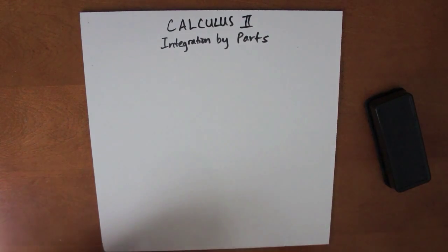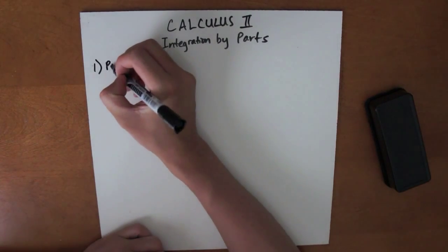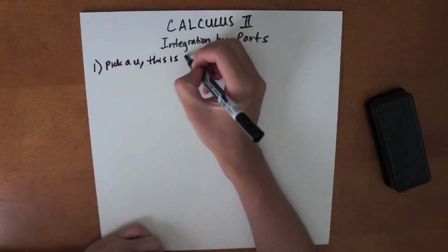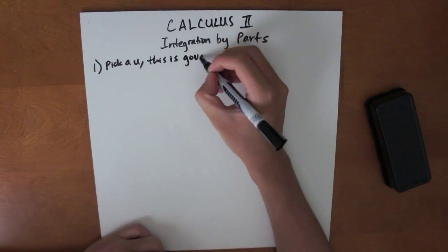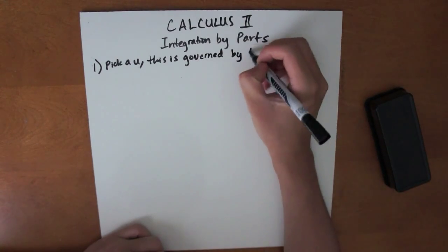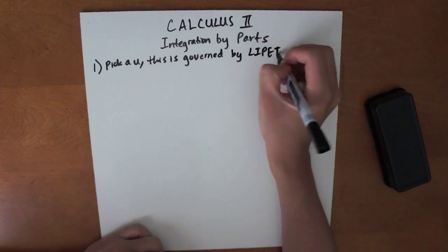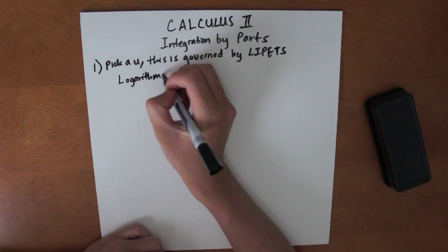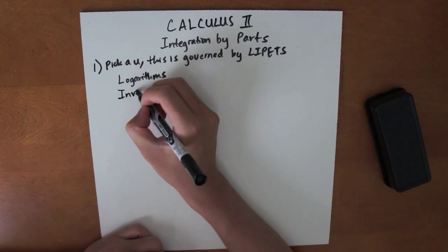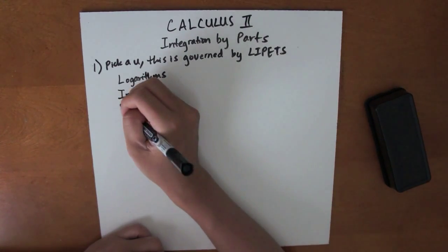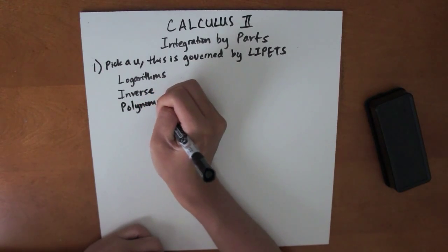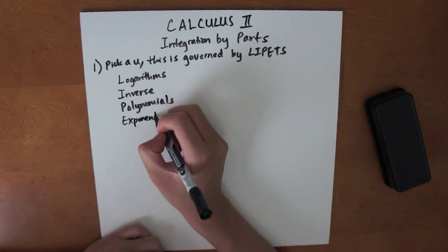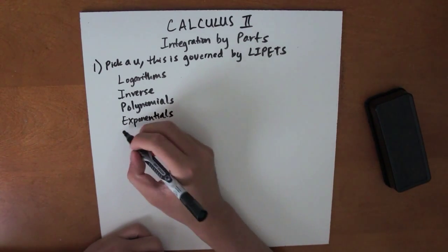Here is the strategy to solve them. First, we pick a u. This is governed by LIATE: Logarithms, Inverse functions, Polynomials, Exponentials, and Trigonometric functions.